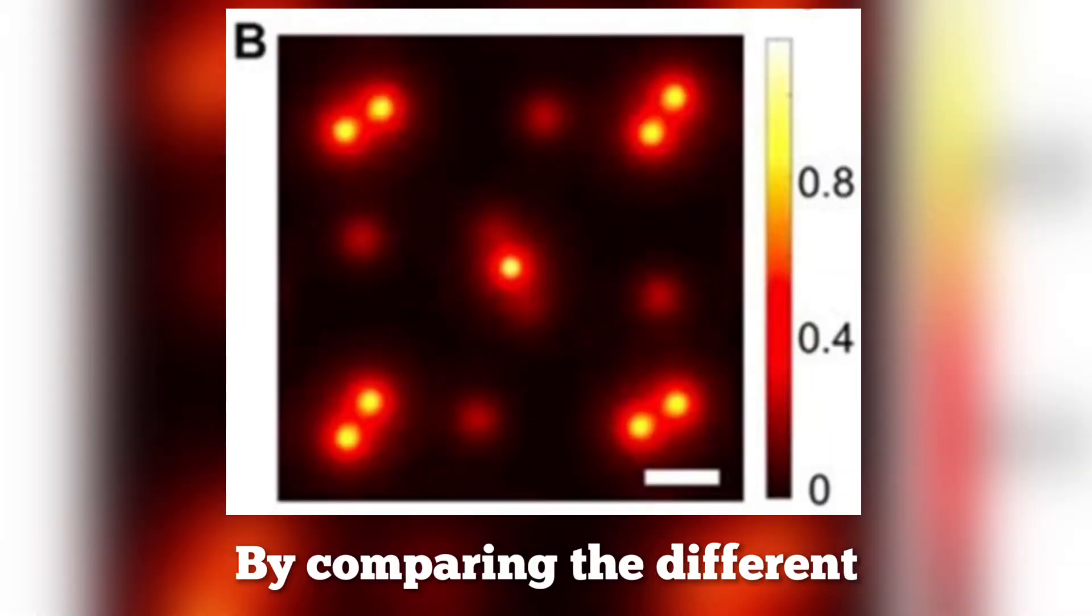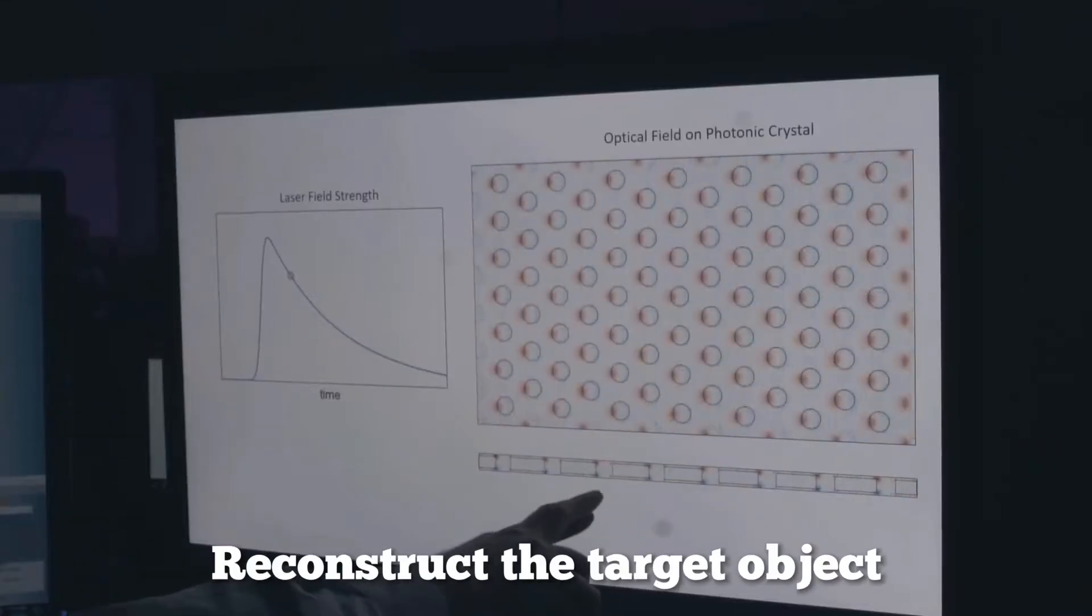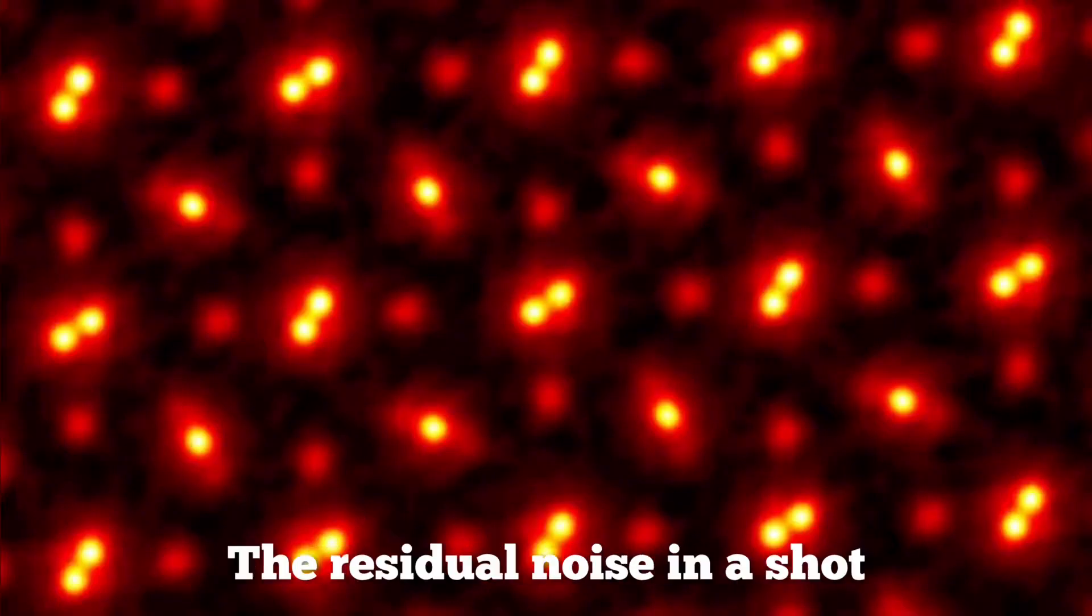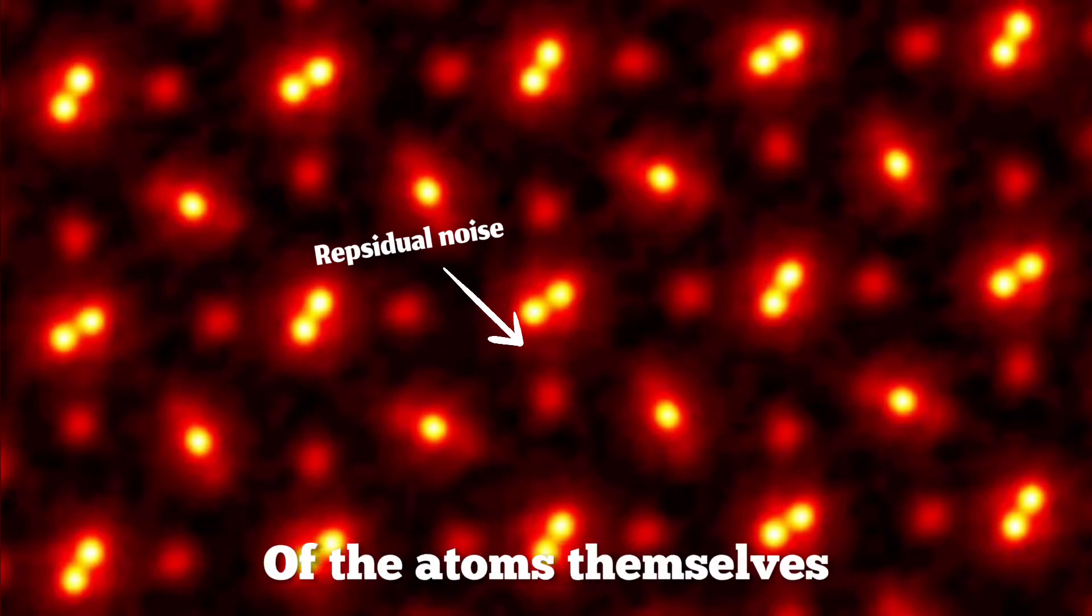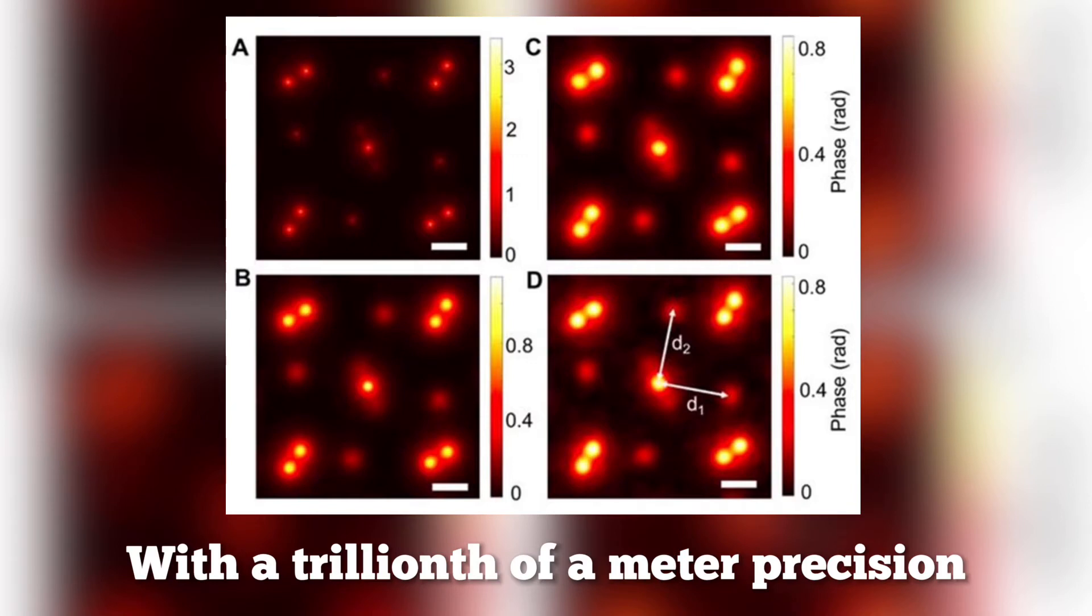By comparing the different overlapping patterns formed by the scattered beam, an algorithm is then able to reconstruct the target object with great precision. The residual noise in the shot is only a product of the thermal vibration of the atoms themselves. From this, an image can be reconstructed with a trillionth of a meter precision.